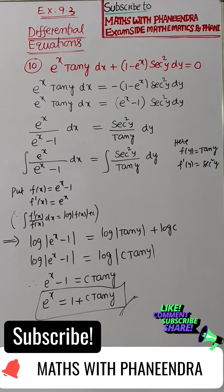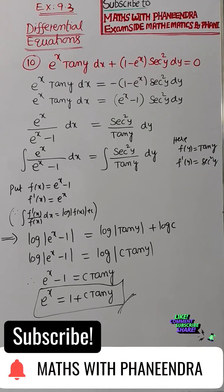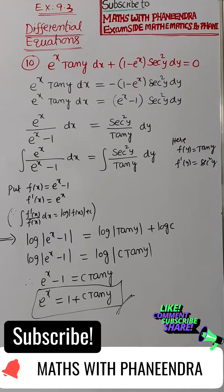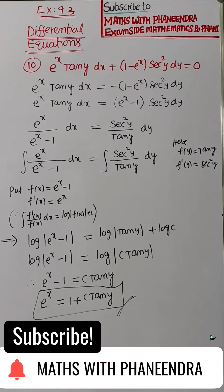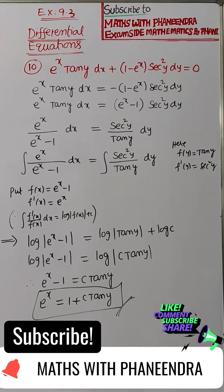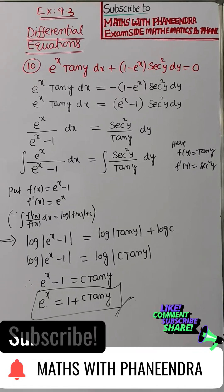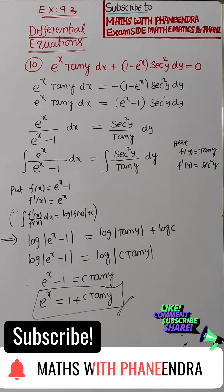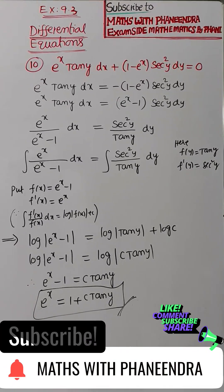Solve the differential equation e power x tan y dx plus 1 minus e power x into secant square y dy equal to 0. This question is related to variable separable method in differential equations.